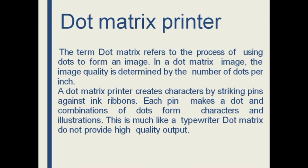The term dot matrix refers to the process of using dots to form an image. In this type of printer, the image is formed using several dots, and image quality is determined by the number of dots per inch. A dot matrix printer creates characters by striking pins against an ink ribbon. Each pin makes a dot, and a combination of dots forms the character or illustration. It does not provide high quality output compared to other higher-scale printers.